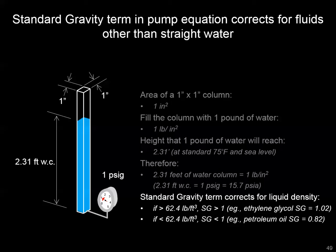The pump equation also has an SG, or specific gravity, term. This accounts for how much the density of the fluid in your system differs from ideal water. Water has an SG of 1. Ethylene glycol has a very slightly different SG — probably not enough to cause a meaningful change in your pump energy equation, but good to note as you vary from typical HVAC hydronic conditions.